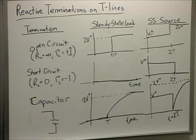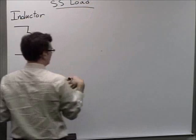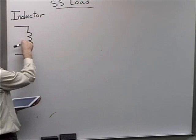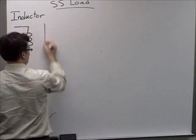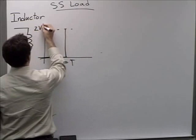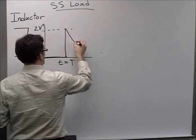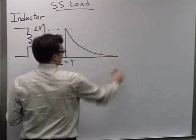For the inductor case, we have an inductive element across the load. My steady-state load graph is going to be a combination of initially an open circuit and in the long run a short circuit, because that's the inductor transient. At time equals T, what was zero voltage output jumps up to 2V⁺ — whatever voltage was put on that line — and then decays exponentially until it looks like a short circuit at the load.